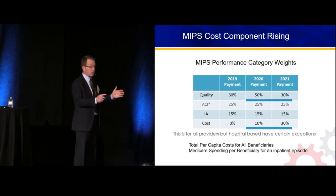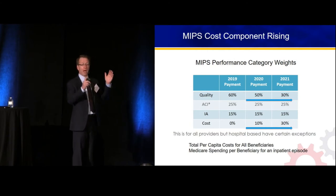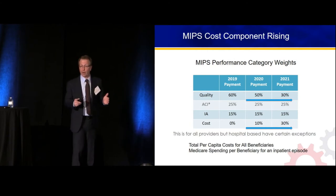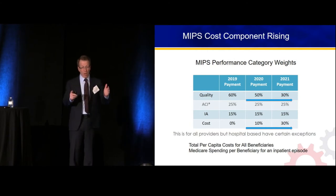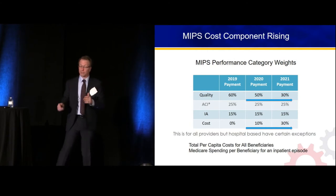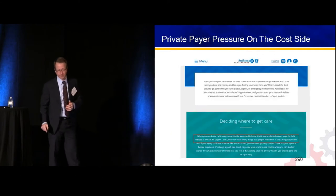The take-home is the cost component is right out there. 10% of that MIPS score is based on cost — they call it cost — and it's going up to 30%.